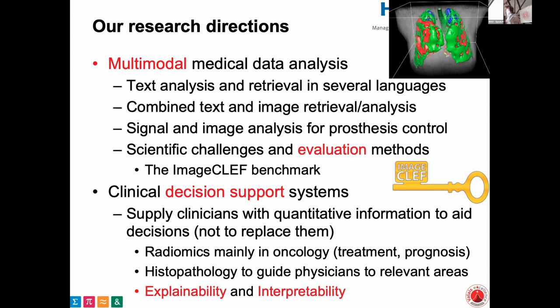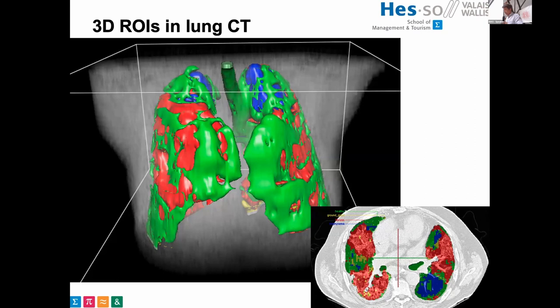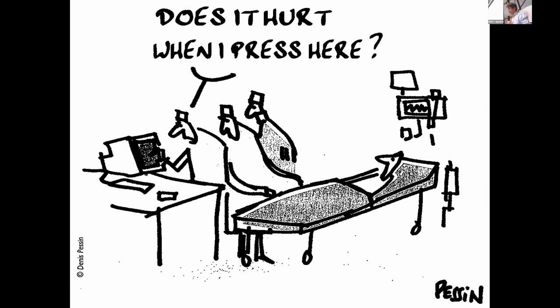What we're really trying to do is help clinicians integrate all the data they have to take the best informed decisions — providing quantitative information, because clinicians are usually very good qualitatively at integrating data. But now with multiple imaging protocols, genetic data, and so much more, in complex oncological cases it's actually really difficult to take the best decisions for diagnosis, treatment, and treatment response monitoring. We also do a lot of histopathology and try to combine radiology and histopathology. The 3D visualization we developed made it much faster to understand a whole case in just a few seconds.